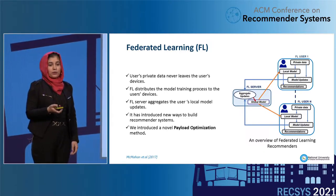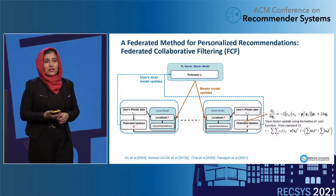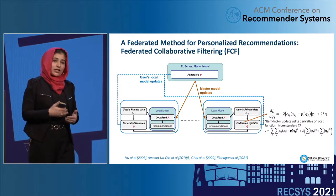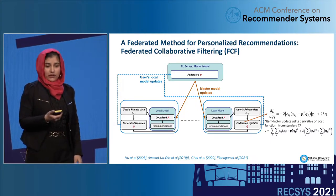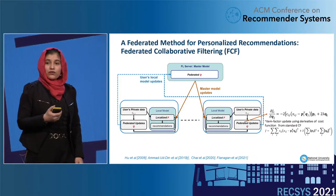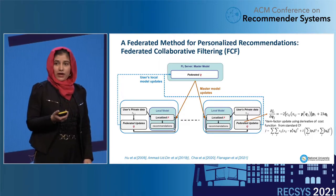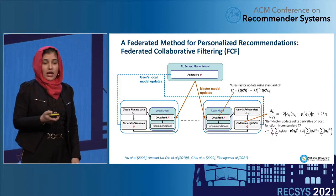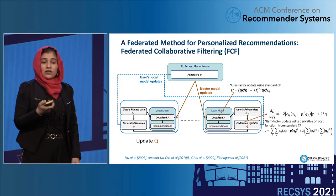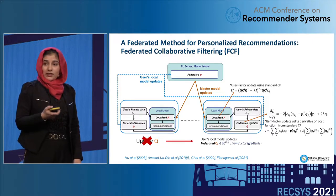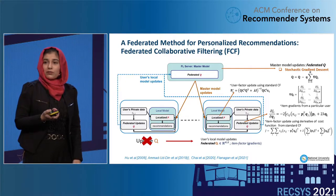In the context of federated recommender systems, we introduced a novel payload optimization method. A prominent direction of research in this domain is based on federated collaborative filtering, which extends standard collaborative filtering to the federated mode, where users receive item factors from the server and the update of user factors is independent of all other users. Every user updates the user factors using an optimal solution from standard collaborative filtering, whereas the update to item factors depends on the user factors of all users, so its update cannot be done locally. Instead, the server updates item factors following stochastic gradient descent and the local model updates from the users.